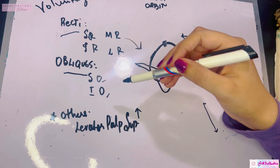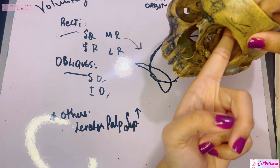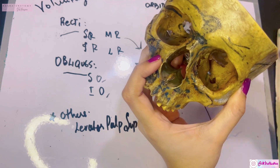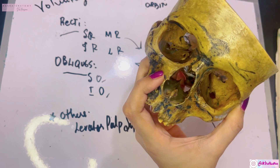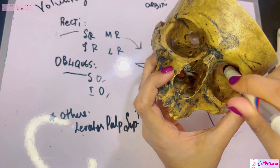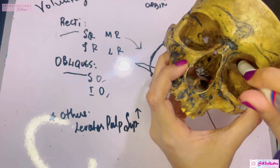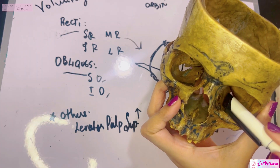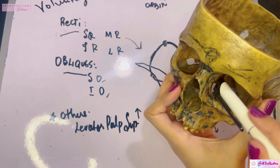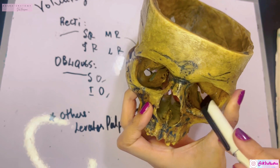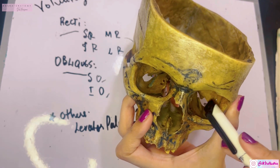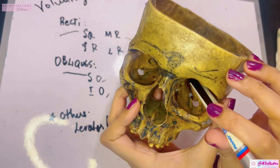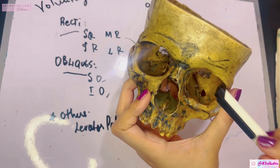The superior oblique arises posteriorly, supramedial to the optic canal, from the undersurface of the lesser wing of the sphenoid. The inferior oblique originates from the orbital surface of the maxilla bone, just lateral to the lacrimal groove, which lies in the medial wall at the anterior margin of the orbit. The levator palpebrae superioris arises from the orbital surface of the lesser wing of the sphenoid bone.